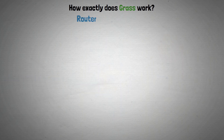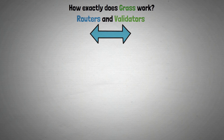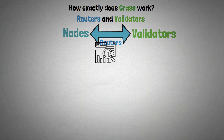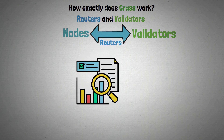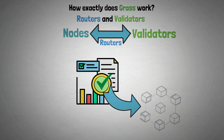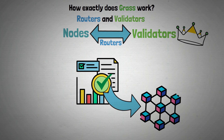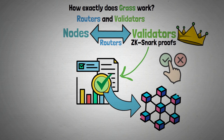Routers and validators: data flow between nodes and the network's validators is facilitated by routers. In order to ensure that all processed data is accurate and trustworthy before being logged on the blockchain, validators are essential because they use ZK-SNARK proofs to confirm the authenticity of the training data.